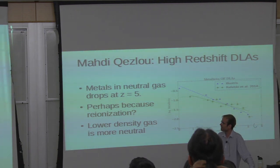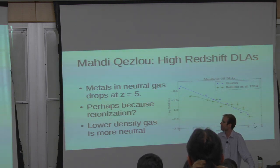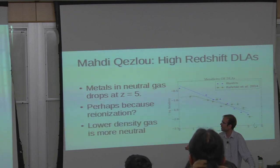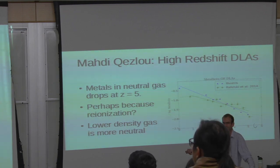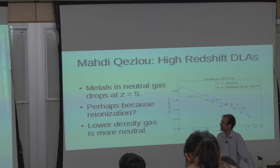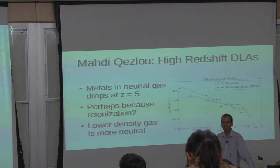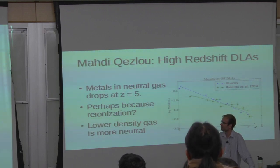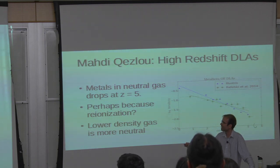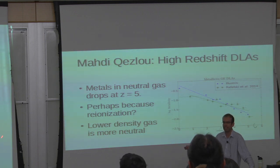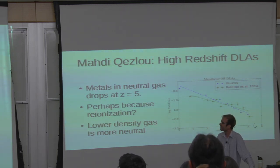This was an interesting result from a few years ago. If you look at the metallicity of neutral gas in the universe as a function of redshift, you find it's roughly flat up to about redshift four and a half, and then it drops suddenly. The naive interpretation is that this has something to do with reionization — maybe neutral gas had a metallicity that evolved up to about redshift five, and then more gas at much lower densities starts to become neutral, and the average metallicity drops.